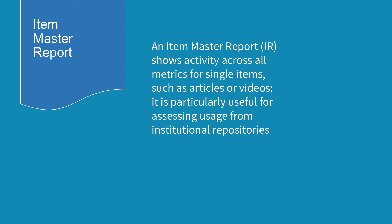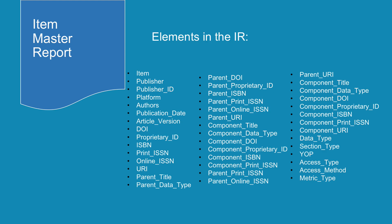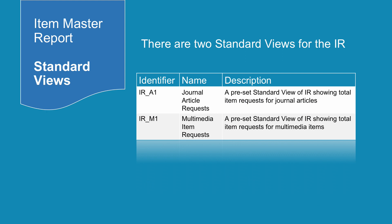An Item Master Report, IR, contains so much detail it is not possible to show an example report here. The 36 column heads associated with an IR cover the item itself, its parent, and its component parts. An IR can be filtered according to user needs and has two standard views. IR A1 shows journal article requests — a preset standard view showing total item requests for journal articles, most likely used by institutional repositories. IR M1 shows multimedia item requests — a preset standard view showing total item requests for multimedia items, most likely used by multimedia publishers.